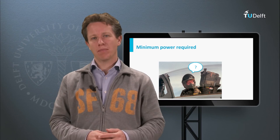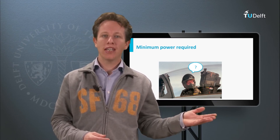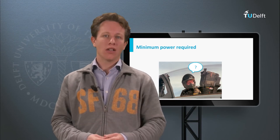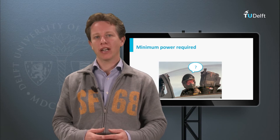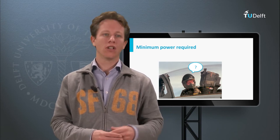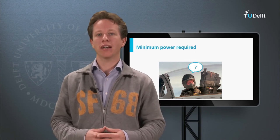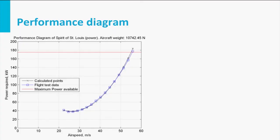We cannot simply ask the pilot to fly at the minimum power required condition — we should calculate the corresponding optimal airspeed for maximum endurance and write that in the flight manual. Going back to our performance diagram, the minimum power required condition is the minimum of the graph. For the Spirit of St. Louis at 10.7 kN of weight, the optimal speed is 26 meters per second, or 93 kilometers per hour.